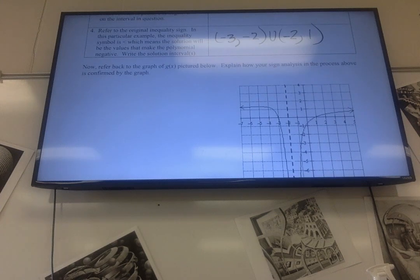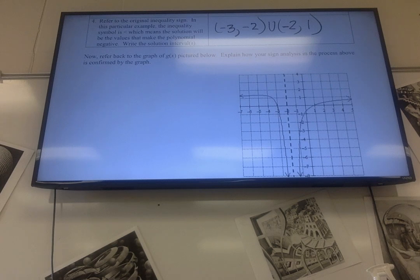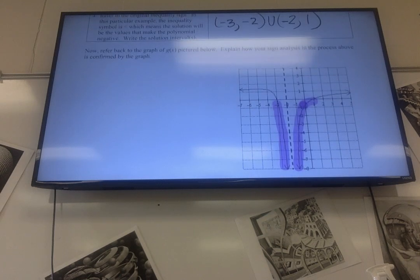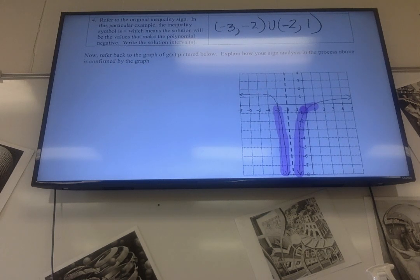Now they gave us the picture and we can see that it is below the x-axis in here. Notice that's from negative 3 to negative 2, didn't include negative 2 because that's an asymptote, and then negative 2 to 1, just like we have. So it's just verified by the graph, which is good. We wouldn't want it to be something totally different.